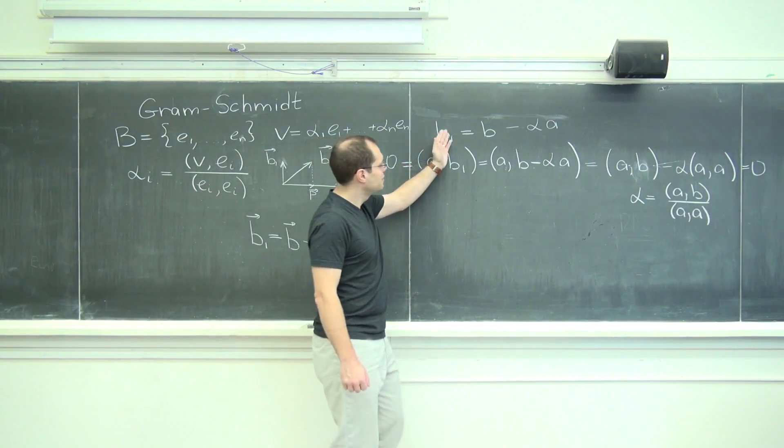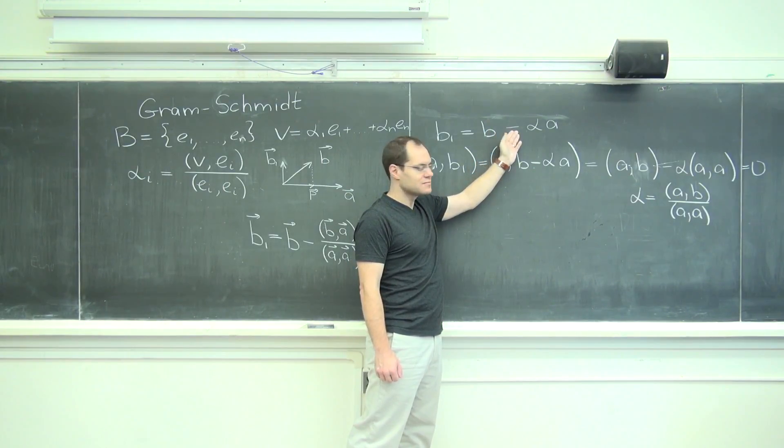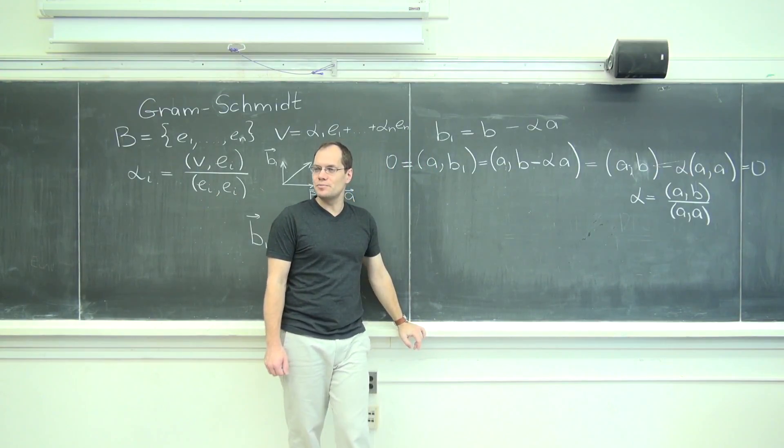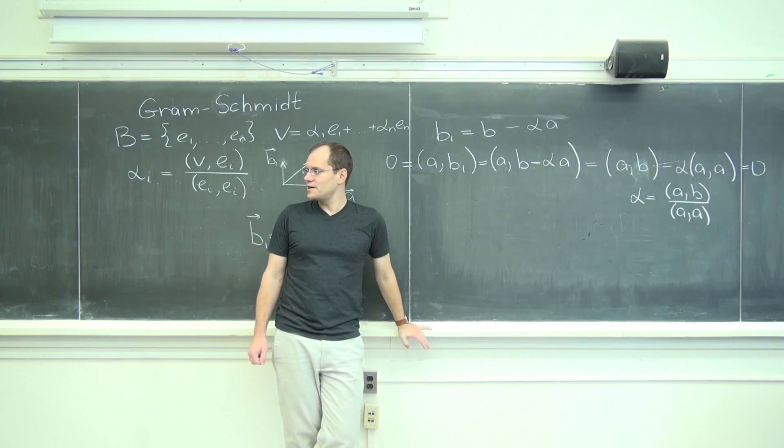There you go, gave you the exact same formula. So b1 equals b minus that times a. The exact same formula. So we could have derived it algebraically. You guys are cool with that?